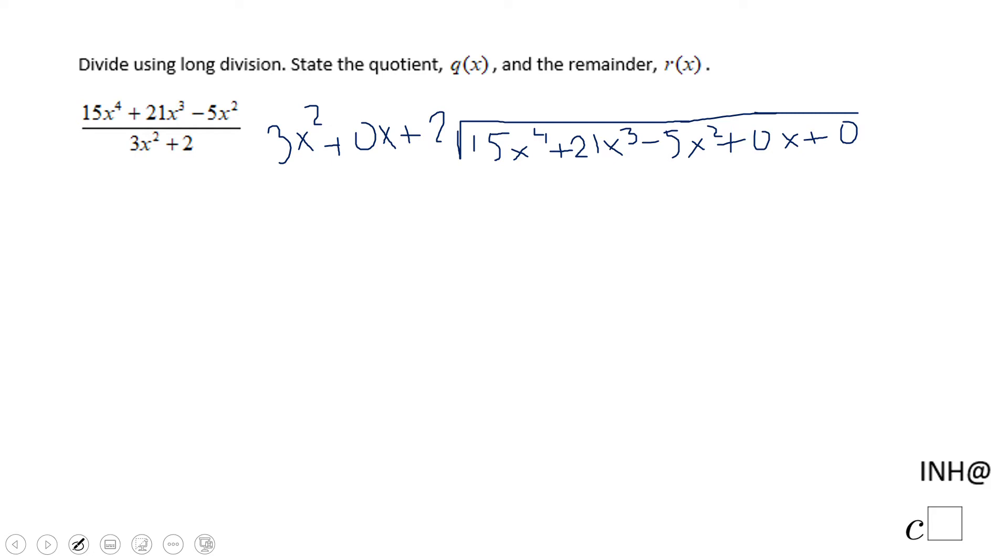What should I multiply 3x squared to get 15x to the 4 power? And that will be 5x squared. 5x squared times 3x squared is 15x to the 4 power. 5x squared times 0 is 0, times 0x is 0x cubed.